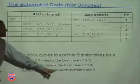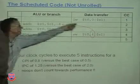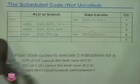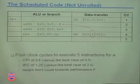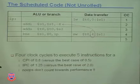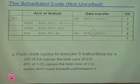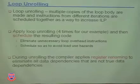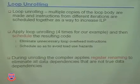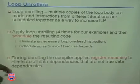The no-ops that we had to put in, of course, don't count toward performance. So we've got a CPI of 0.8. Let's see if we can do better - let's unroll the loop.